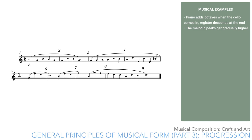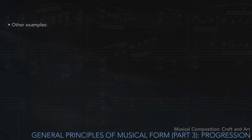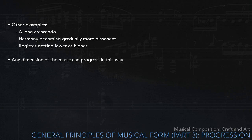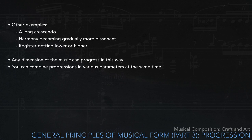This technique is extremely common. Other examples of formal progressions include a long crescendo, harmony becoming gradually more dissonant, and register getting lower or higher. Almost any dimension of the music can progress in this way. If you want to make the overall effect more dramatic, you can combine various parameters at the same time — for example, a rising line and a crescendo.